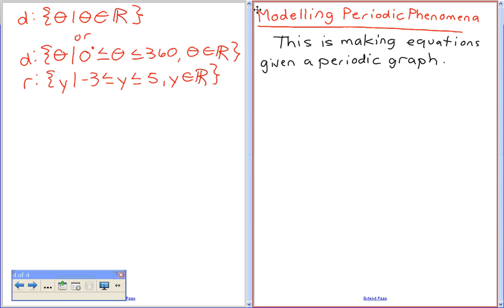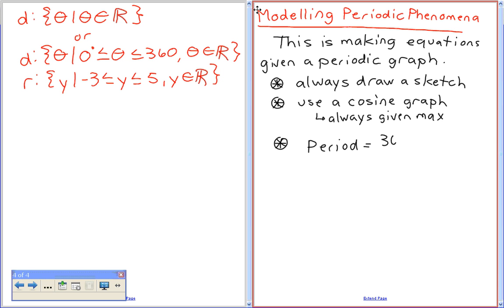Make an equation for a periodic graph. Hints are going to be: number one, always draw a sketch. Number two, use a cosine graph. Why might it be easier to use a cosine graph? Very good. So cosine graph, we are always given the max. And the third thing, what is the period of an equation? The period is going to be 360 over k.